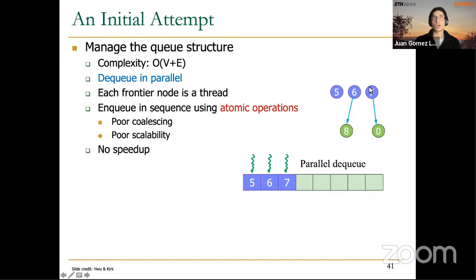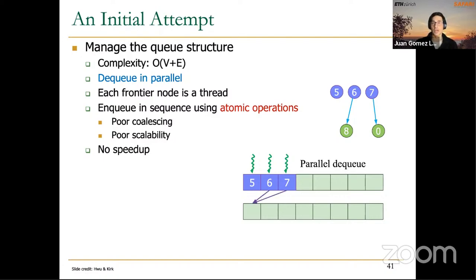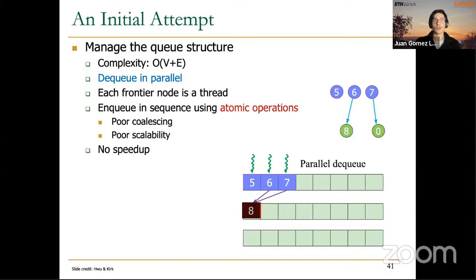At the end of one iteration, we will have an output frontier generated by visiting the neighbors of the current frontier. When two threads try to access the same memory location at the same time, we have a conflict. If we have a conflict, both threads try to update the same queue position and the result won't be correct. So we have to use atomic operations, as we know from previous lectures. By using atomic operations, each thread atomically increments a shared counter to get the index where it will store its neighbor in the output frontier.